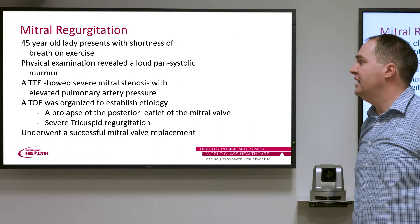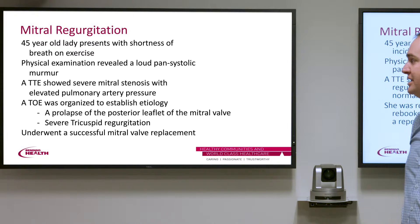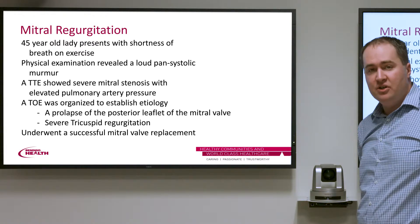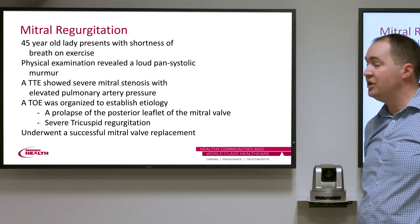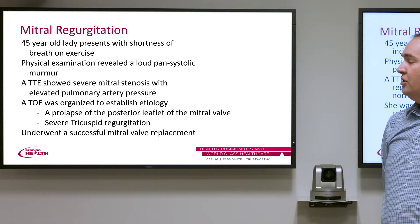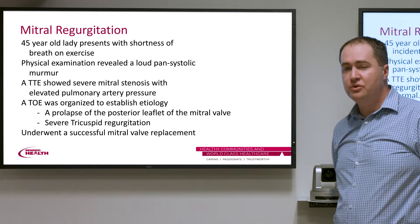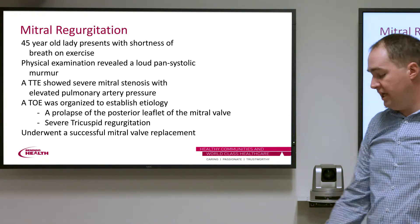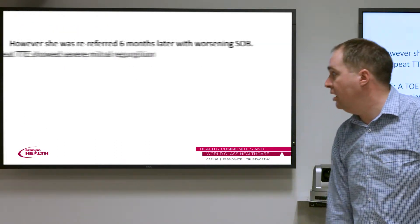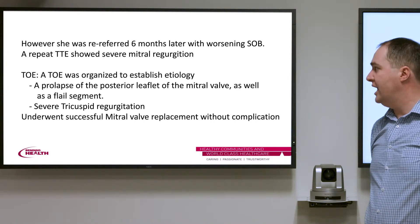The case for mitral valve disease is a 45-year-old lady — this is the typical patient we see. She presented with an incidental finding of a murmur, with physical exam showing a pan-systolic murmur radiating to the back or sternum depending on which leaflet is involved. A TTE showed mild to moderate mitral regurgitation but was otherwise largely normal. In clinic, the decision was made for a 12-month repeat echo to assess progression.